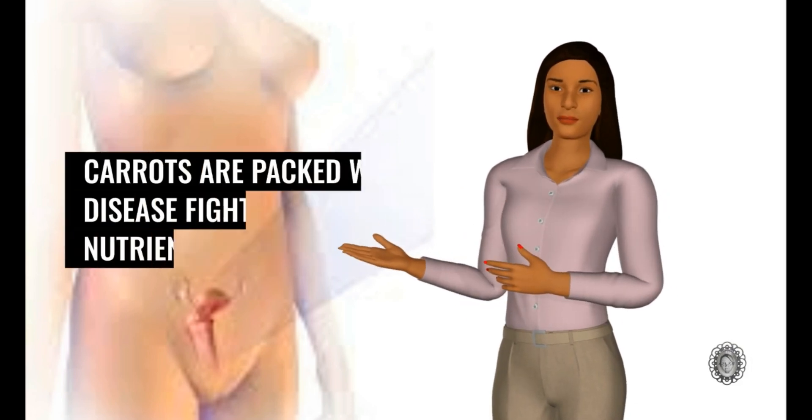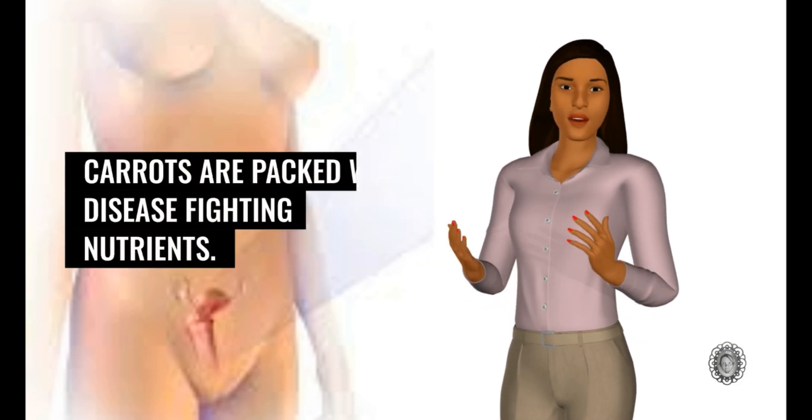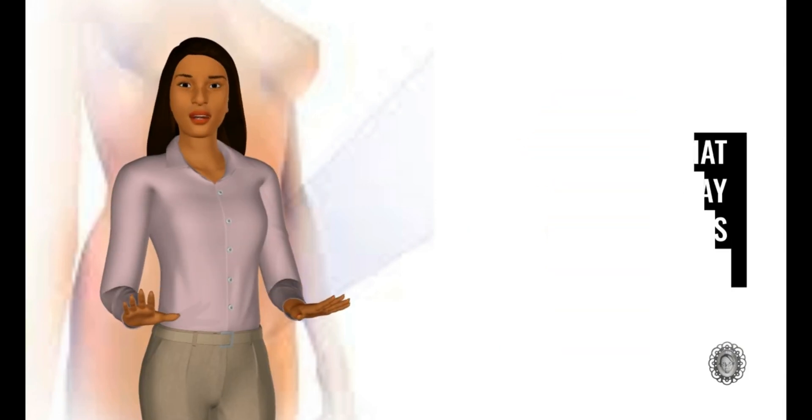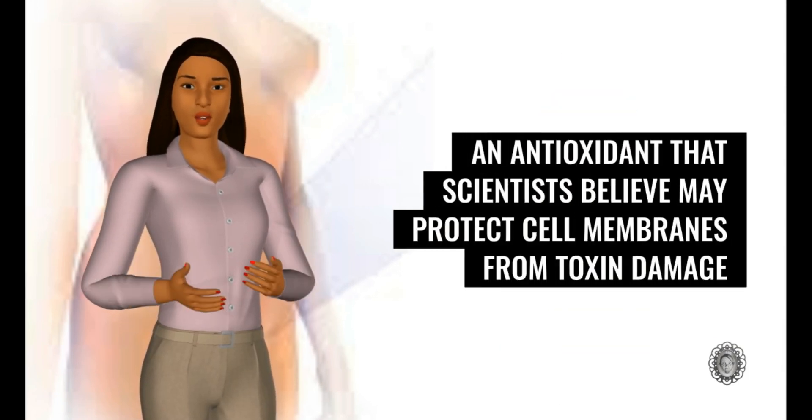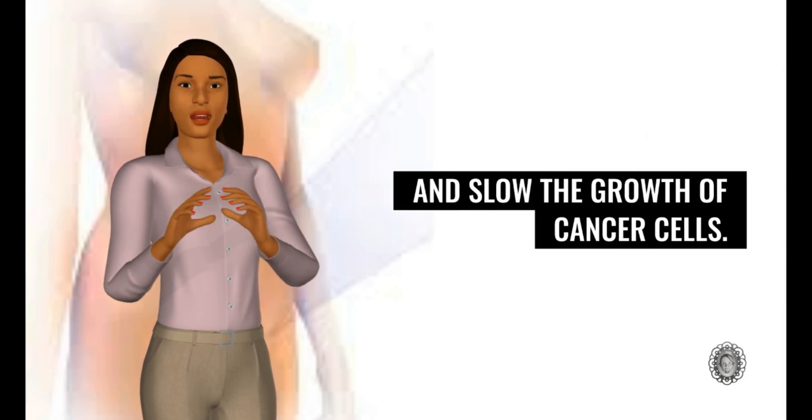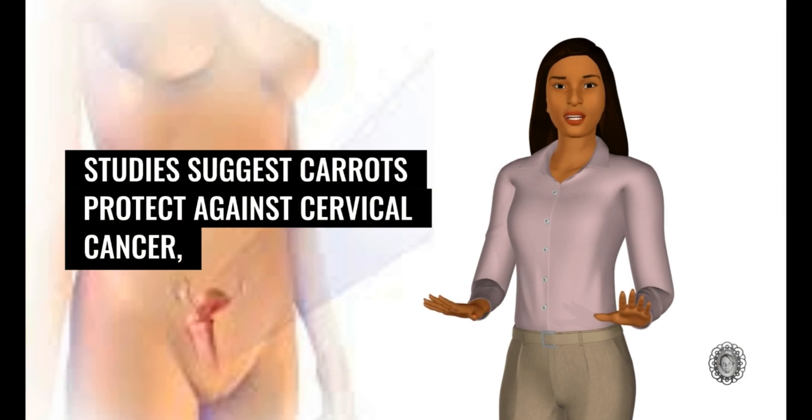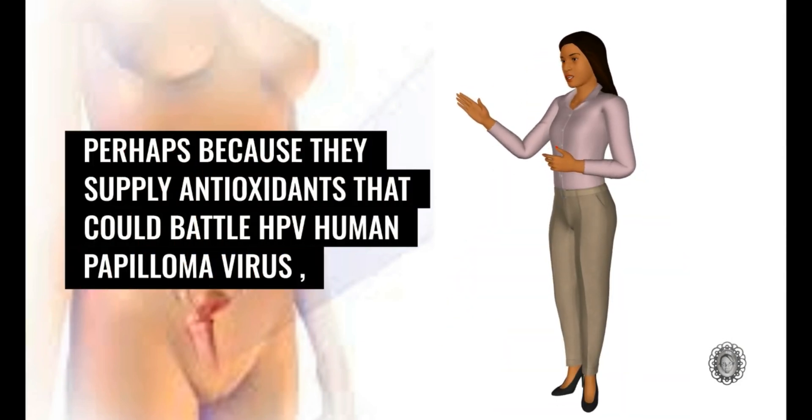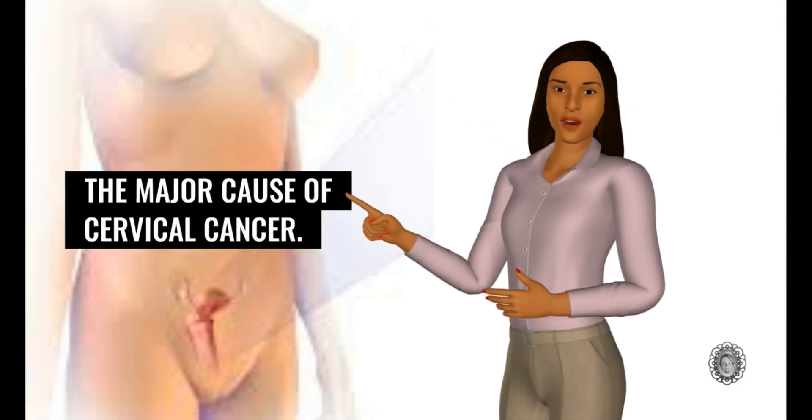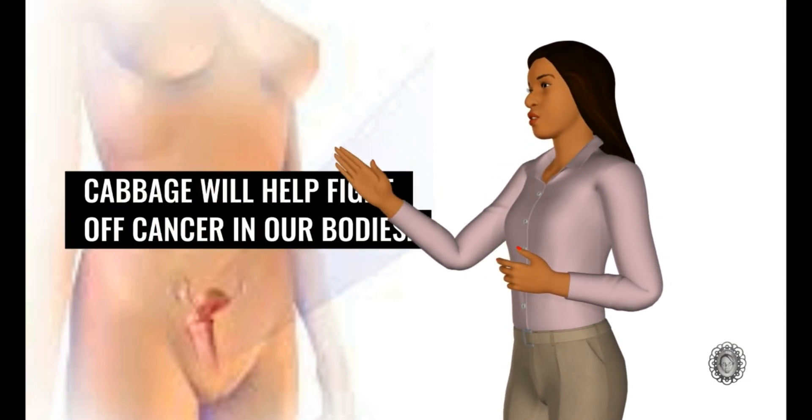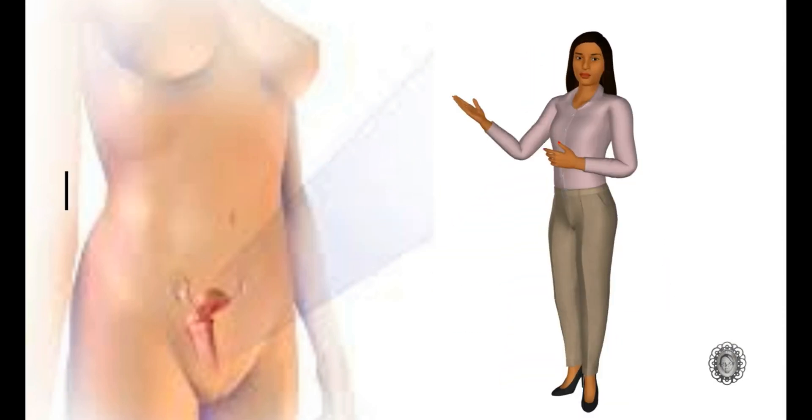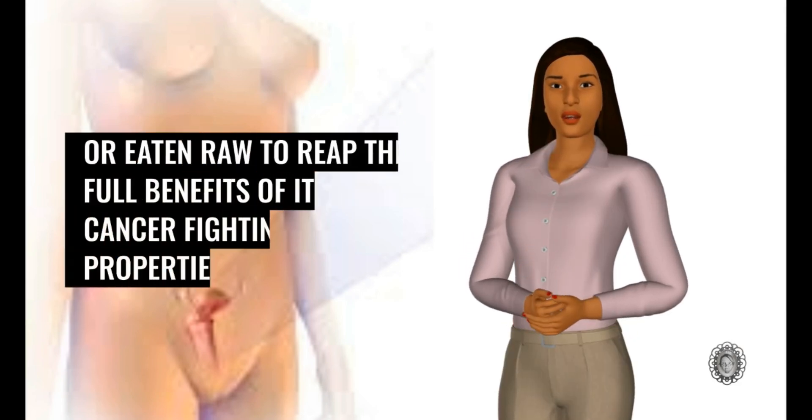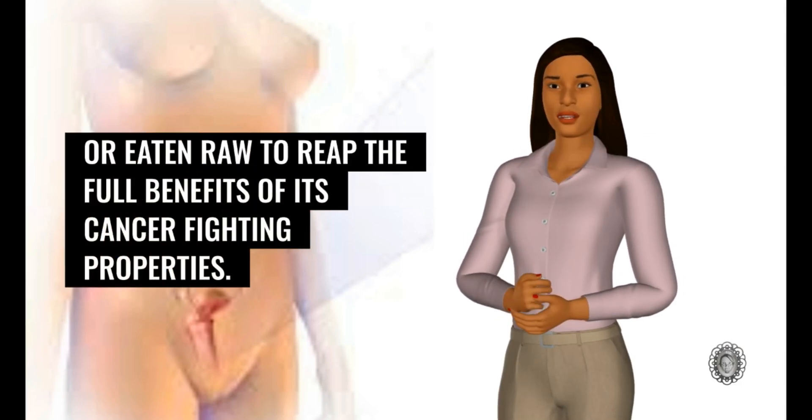Carrots are packed with disease-fighting nutrients. They contain beta-carotene, an antioxidant that scientists believe may protect cell membranes from toxin damage and slow the growth of cancer cells. Studies suggest carrots protect against cervical cancer, perhaps because they supply antioxidants that could battle HPV human papilloma virus, the major cause of cervical cancer. Cabbage will help fight off cancer in our bodies. It should be minimally cooked or eaten raw to reap the full benefits of its cancer-fighting properties.